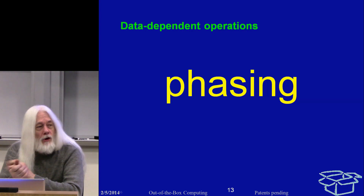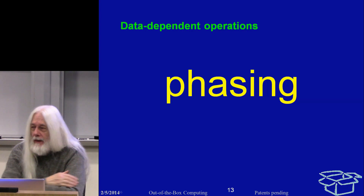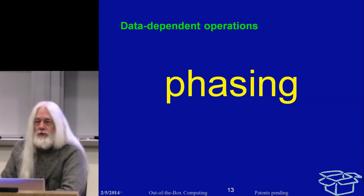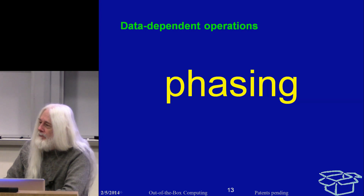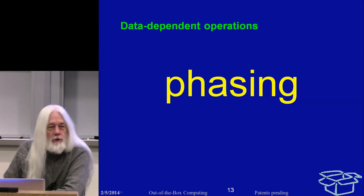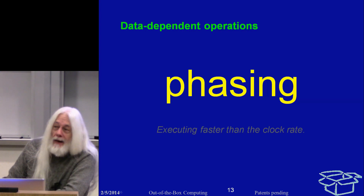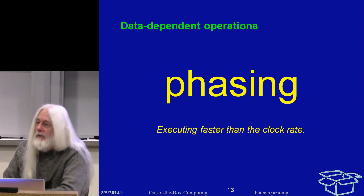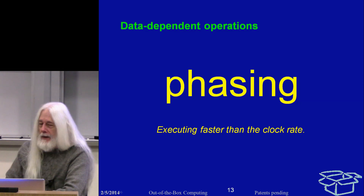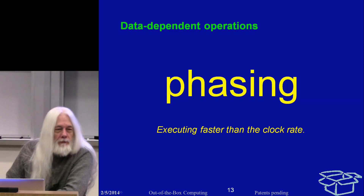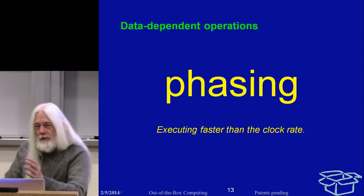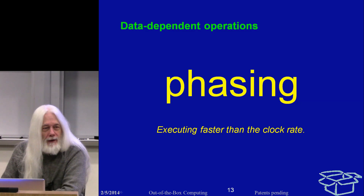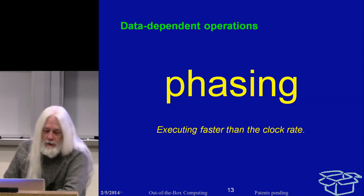I'm going to talk about phasing. Operations connect through data flow paths such that the result of one operation is the input to the next, and the chain of such items is a data flow — frequently a data tree. For most of what I can show on a slide, we're going to be looking at linear data flows rather than trees.